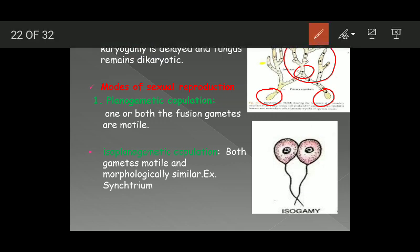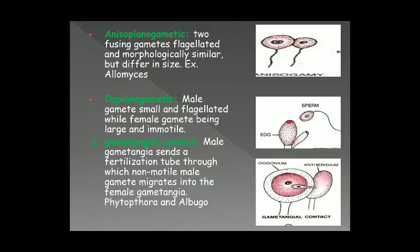Now the different modes of sexual reproduction in fungi — the first one is planogametic copulation. In planogametic copulation, one or both of the fusing gametes are motile. It has different subtypes. The first is isogametic planogametic copulation, where both gametes are motile and morphologically similar — same size and same shape. Example is Synchytrium. Here you can see two different gametes belonging to two different strains that are both motile and morphologically similar.